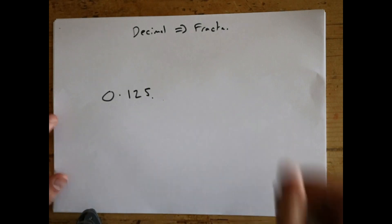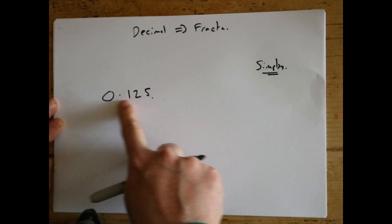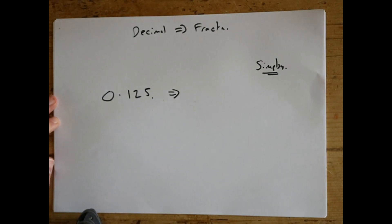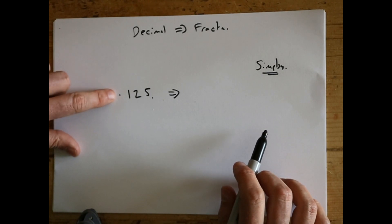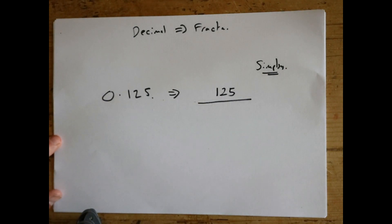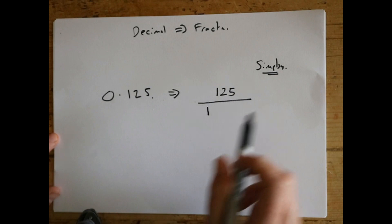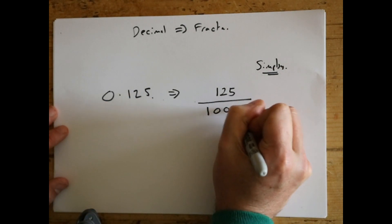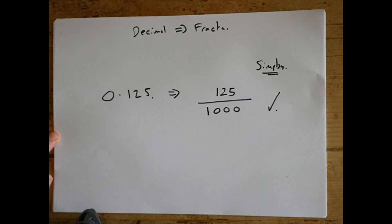So we've gone from fraction to decimal — now how do we get from decimal to fraction? It involves our friend simplify. For the method from decimal to fraction, you take the digits after the decimal point — one two five — and write that on the top of your fraction. To work out the bottom, you write a one and then for every digit you add a zero. We've got three digits, so we get one two three zeros. So 0.125 can be written as 125 over a thousand.